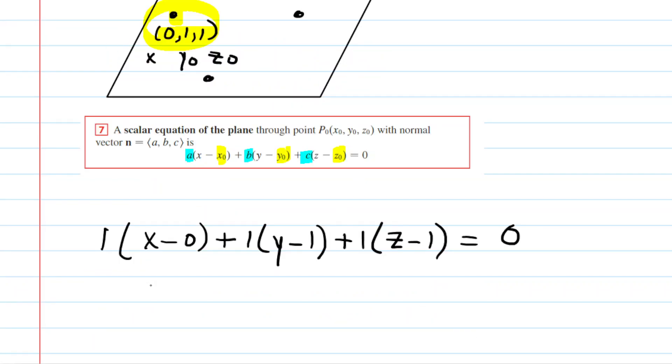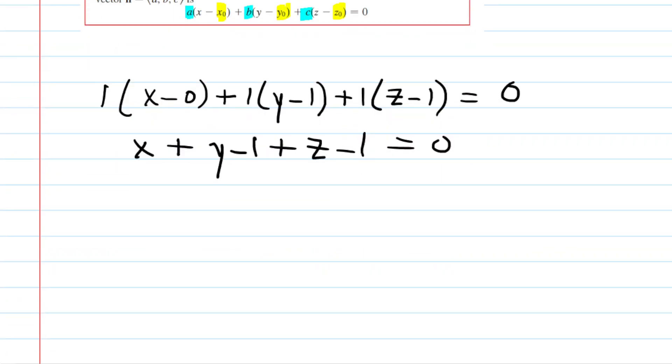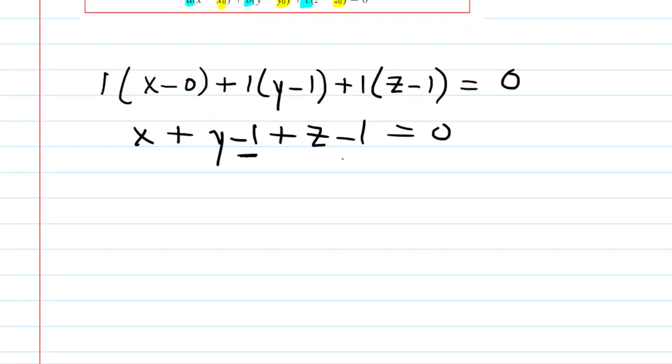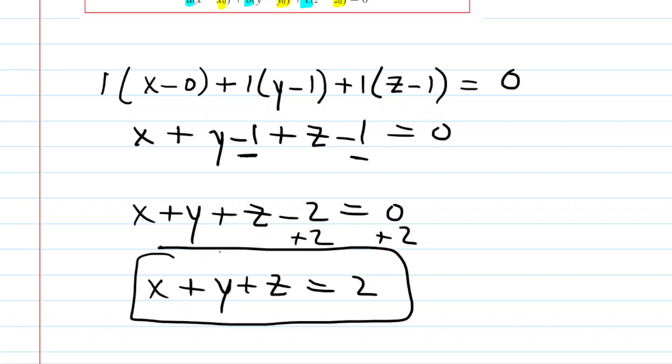And there it is, the equation of the plane containing those three points. We could simplify by distributing those ones. So basically, we're just going to be left with x plus y minus 1 plus z minus 1 is equal to 0. Typically, we combine the constant terms. So this minus 1 minus 1 makes a minus 2. x plus y plus z minus 2 equals 0. And then we add 2 to both sides so that we isolate the variables. x plus y plus z is equal to 2. That is the equation of the plane that contains all three of those points.